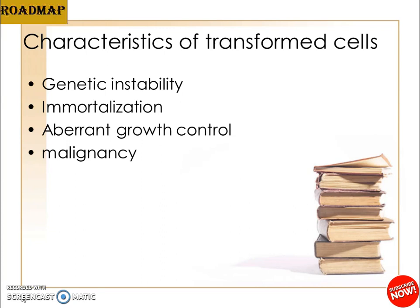Immortalization means the acquisition of an infinite lifespan by a cell that originally had a finite lifespan. Most normal cells from different species have a finite lifespan of 20 to 100 generations, but some cells — like most mouse tumor cells — have an infinite lifespan and go on producing continuous cell lines.